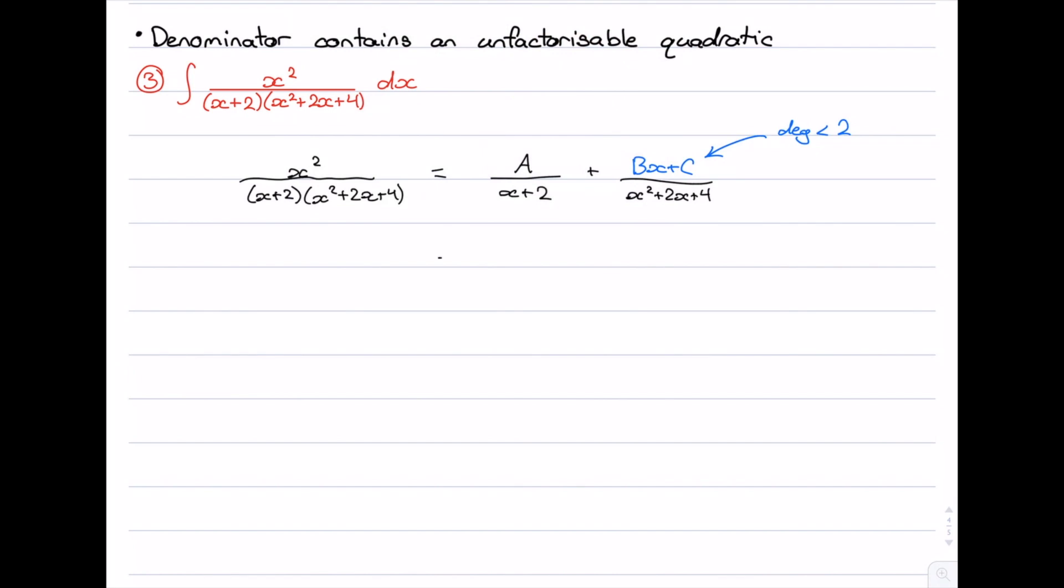So moving on, our next step is to combine our two fractions. So we have A times (x²+2x+4) plus (Bx+C) times (x+2), all of that over (x+2)(x²+2x+4). And what's that equal to? That's equal to x² over (x+2)(x²+2x+4). So we have two fractions which are the same, their denominators are the same which means their numerators must be the same. So x² equals A(x²+2x+4) + (Bx+C)(x+2).